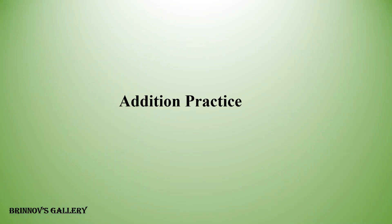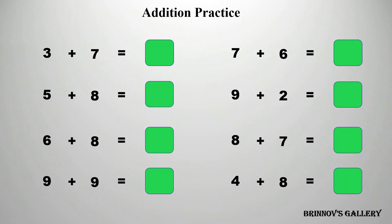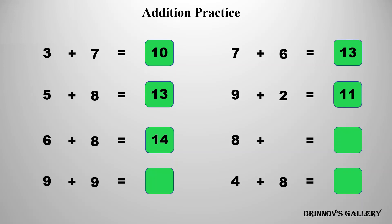Addition practice. 3 plus 7 is equal to 10. 7 plus 6 is equal to 13. 5 plus 8 is equal to 13. 9 plus 2 is equal to 11. 6 plus 8 is equal to 14. 8 plus 7 is equal to 15. 9 plus 9 is equal to 18. 4 plus 8 is equal to 12.